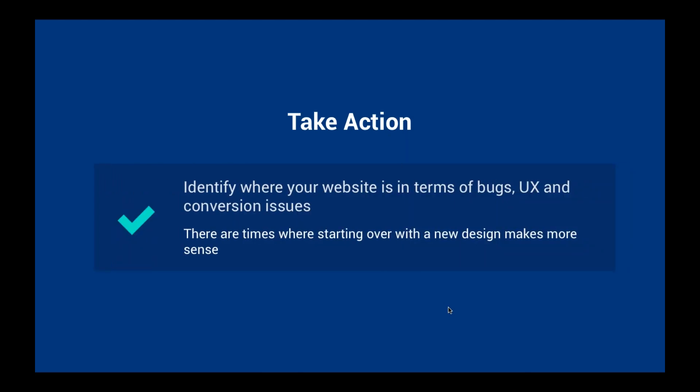Look at your website, identify the issues — bugs, UX, conversion issues — and figure out what you can do to fix them. Now let's talk about the process. We're going to go through the 14-step process. There are about 24 different resources since we teach this process in workshops ranging from two to eight days. I'm going to condense it for you in about 15 minutes to spark your interest so you can read and implement them.